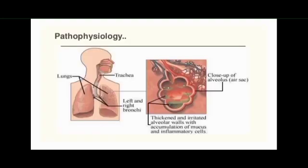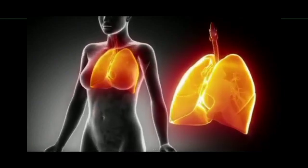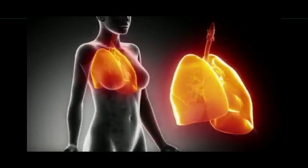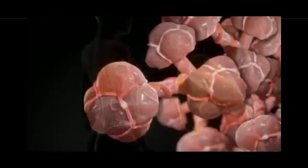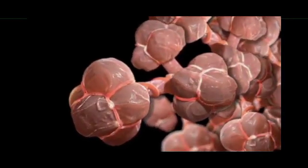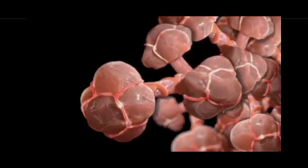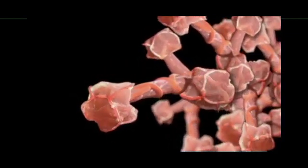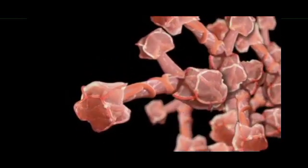In the actual pathophysiology of pneumonia, bacteria and viruses living in the nose, sinus, or mouth may spread to the lungs through droplet infection. Each lung has separate sections called lobes. Normally, as you breathe, air moves freely through the trachea, then through the larger tubes called bronchi, through smaller tubes called bronchioles, and finally into tiny sacs called alveoli.